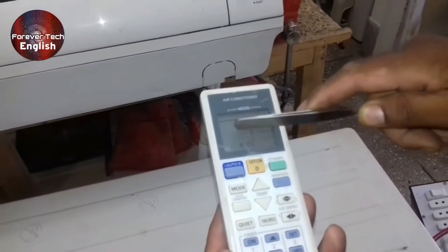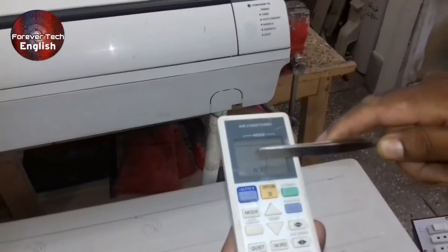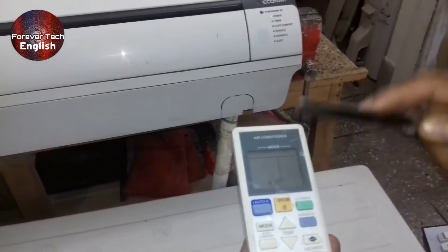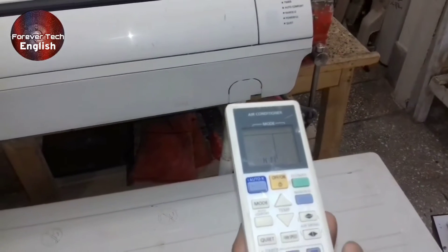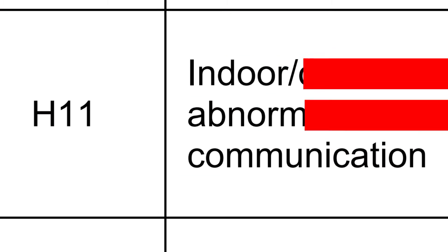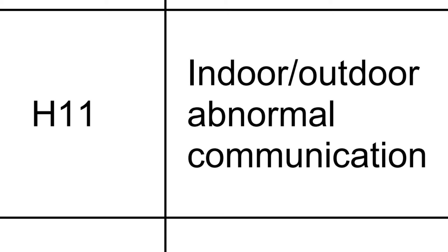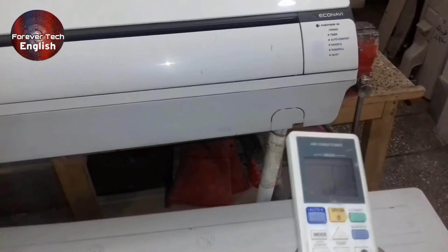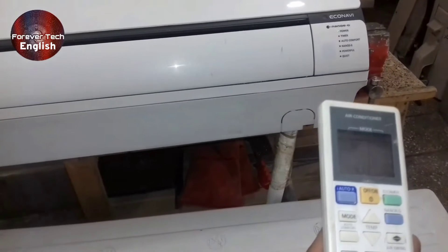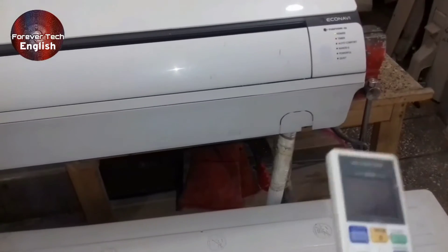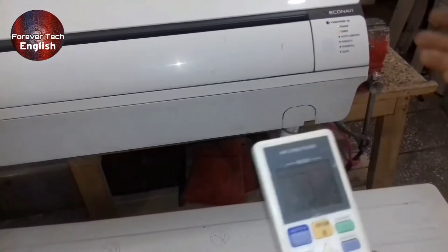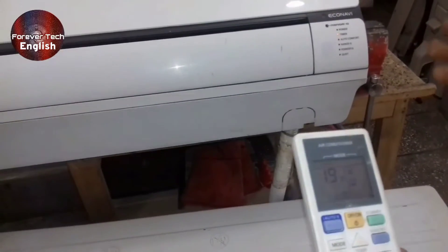When the H11 error code is shown on the display of the Panasonic Inverter Mini Split Air Conditioner, in a technical sense it is known as a communication fault. In a normal sense, it means when the indoor unit is not able to talk with the outdoor, or not able to understand each other's language.